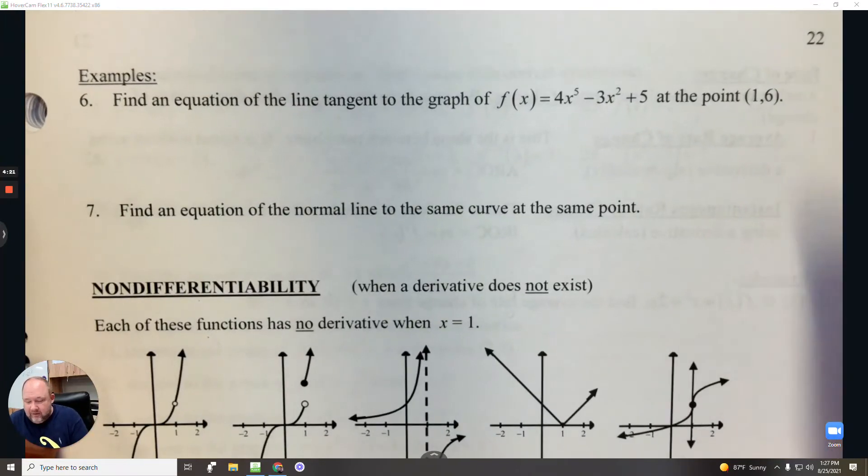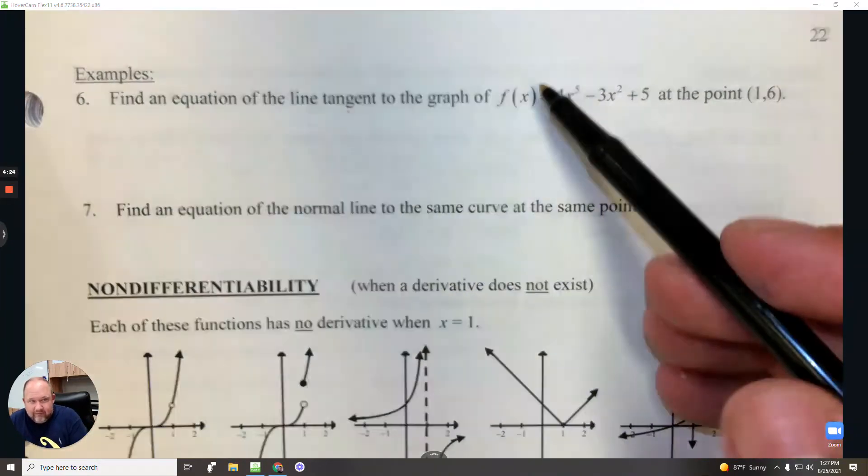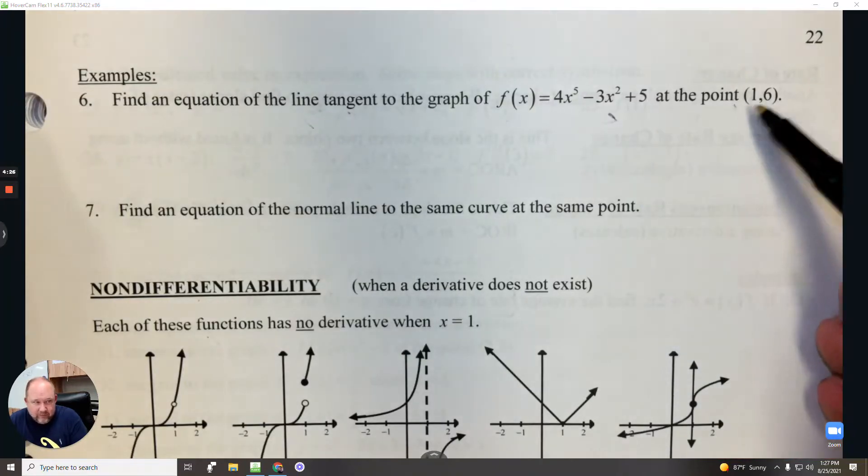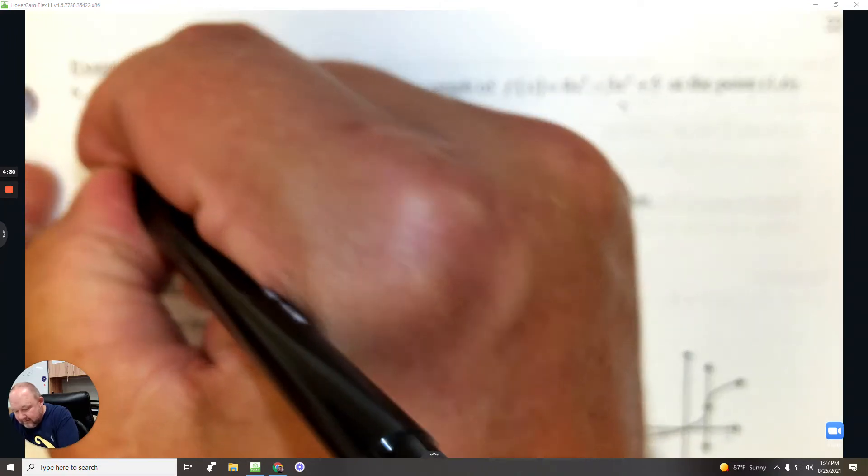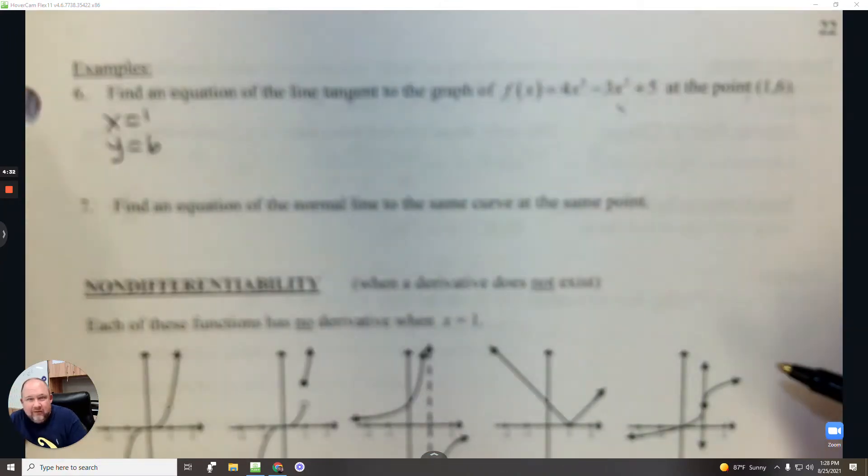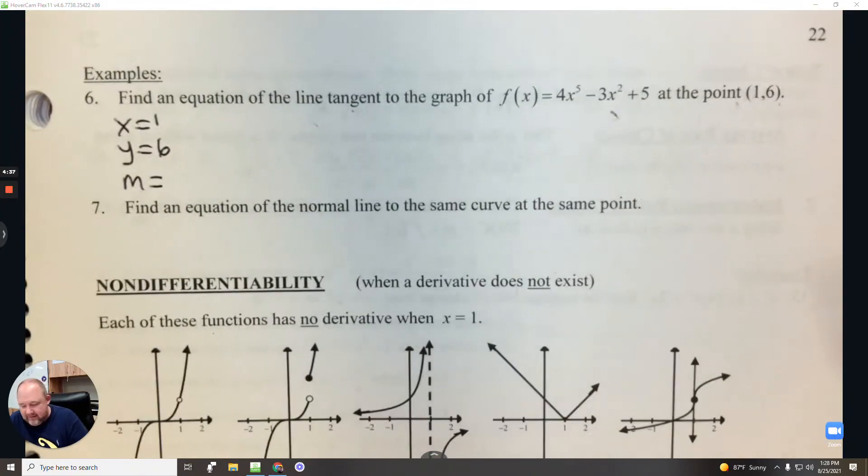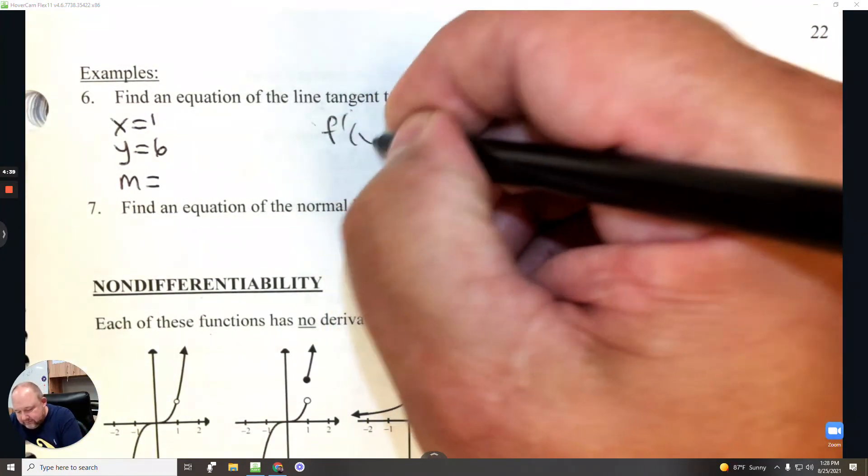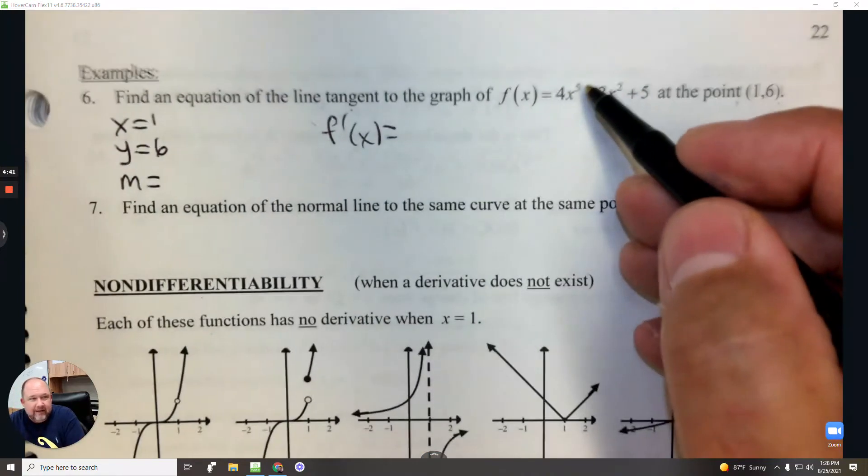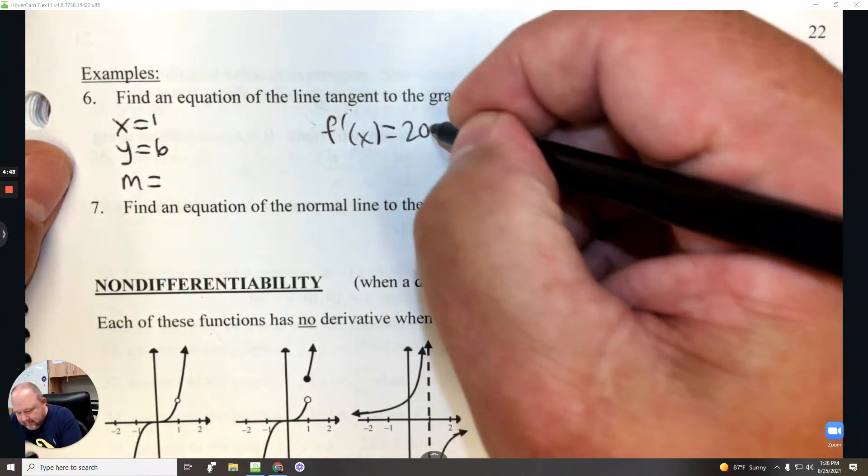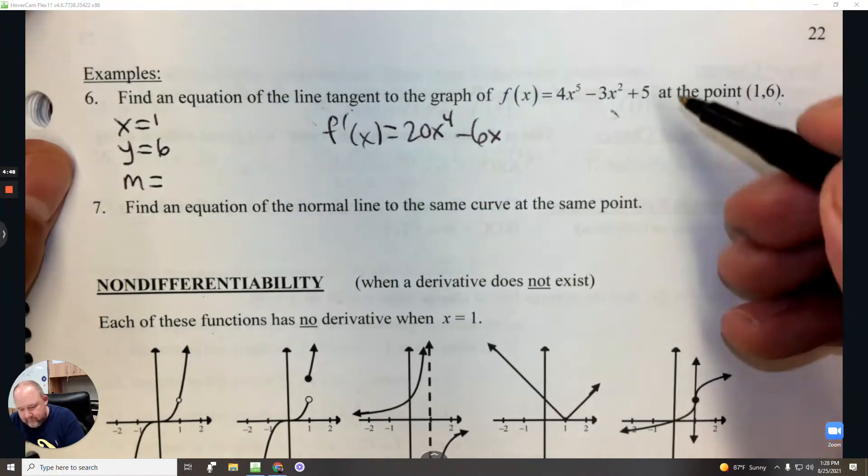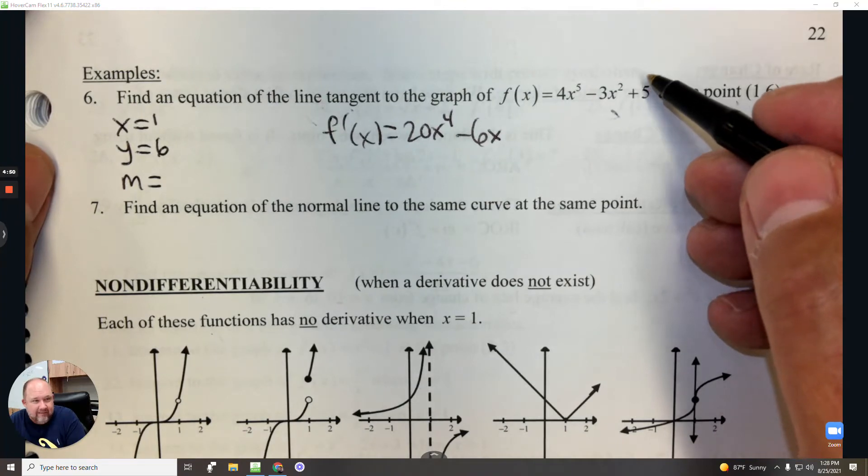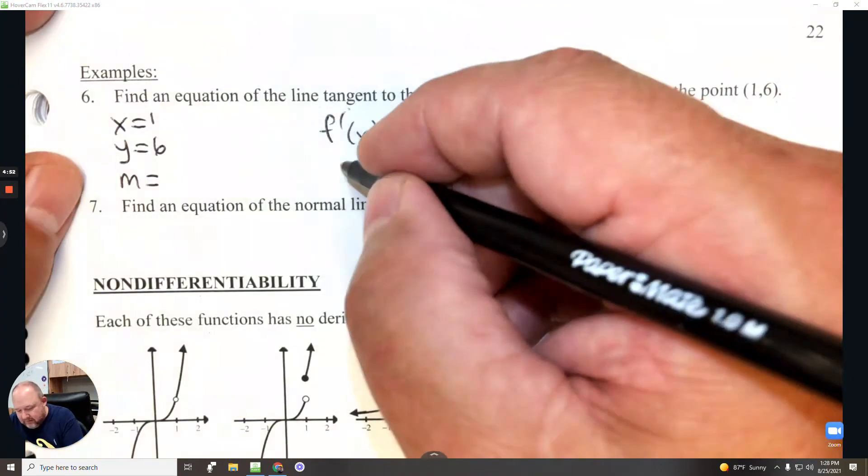In number 6, find an equation of the tangent line for this graph at this point. So I know the x is 1, the y is 6. I need to find the slope. To find the slope of the tangent line, I'm going to take the derivative. So that's 20x to the 4th, that's negative 6x. And the derivative of 5 is 0. Then I'm going to plug in 1.